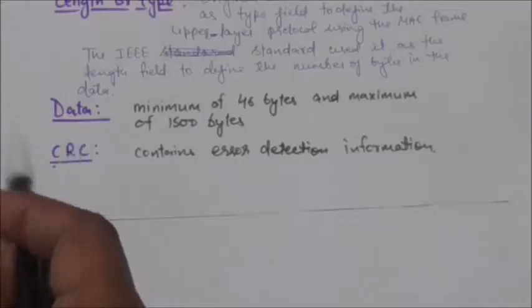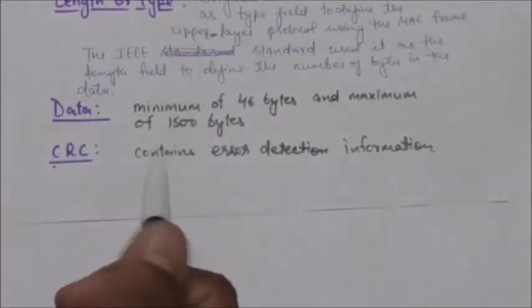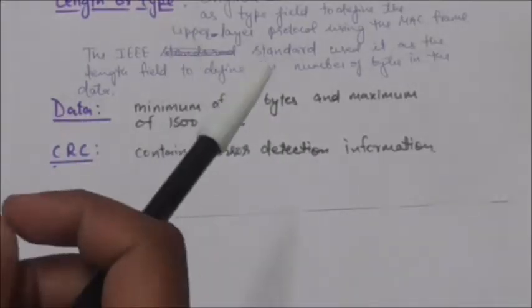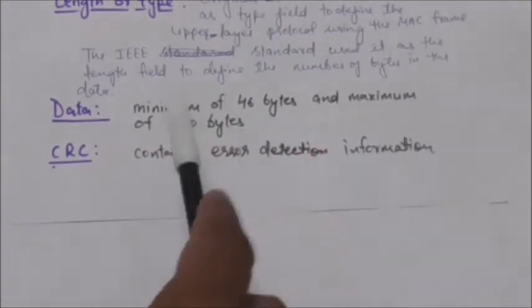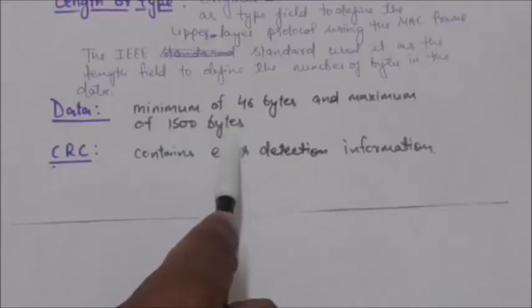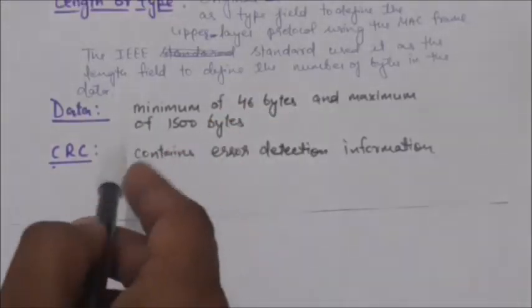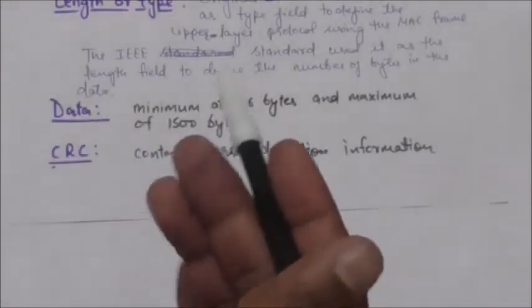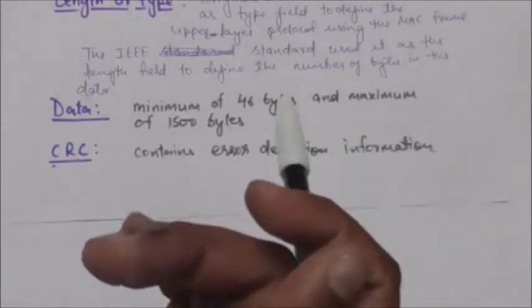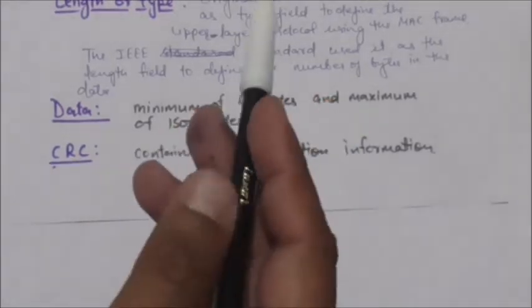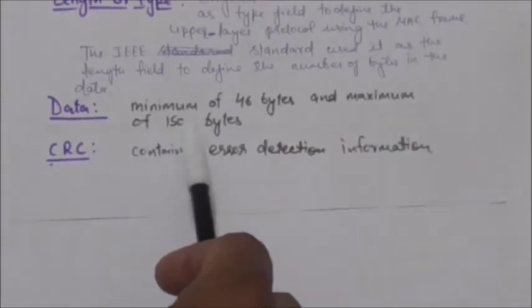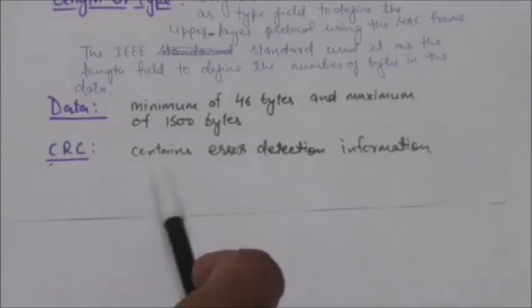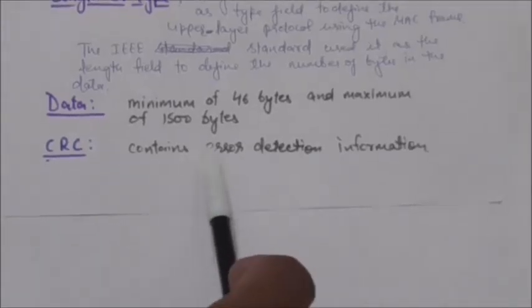The next field is Data. This field carries data encapsulated from the upper-layer protocol. It has a minimum of 46 bytes and a maximum of 1500 bytes.